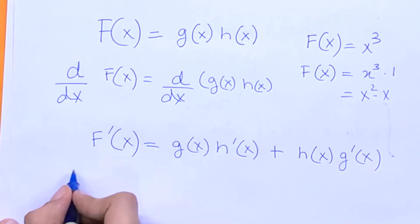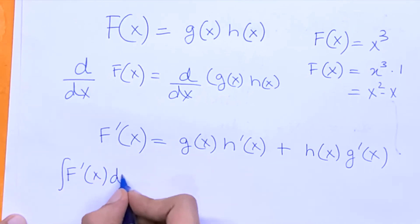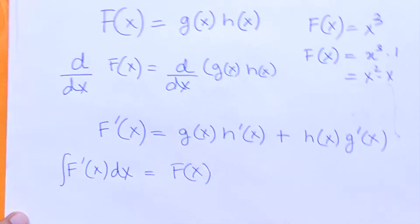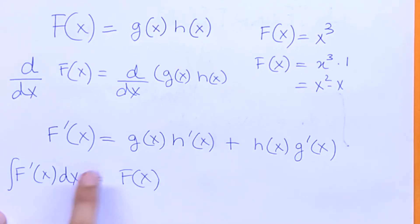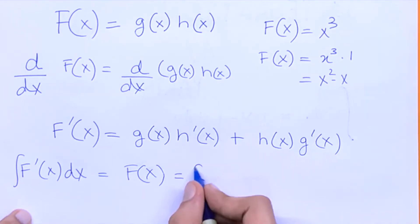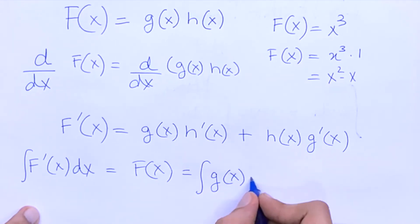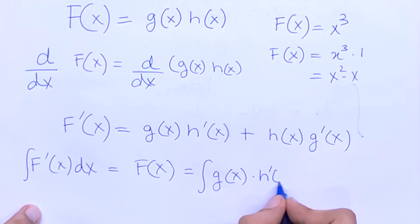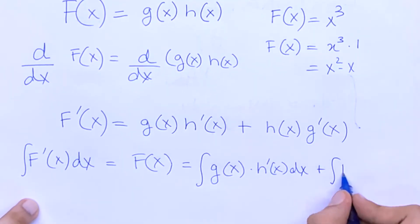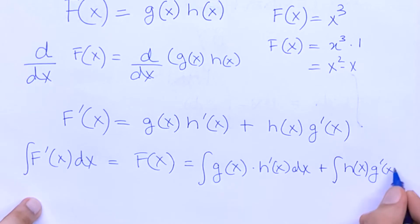So now we know if we integrate f prime of x back, we will get f of x. So we can write this integral as the sum of two other integrals, which is the integral of g of x times h prime of x dx, plus the integral of h of x times g prime of x dx.